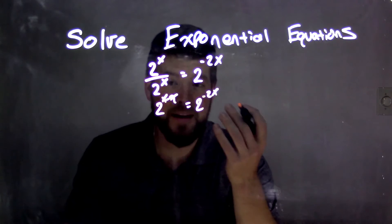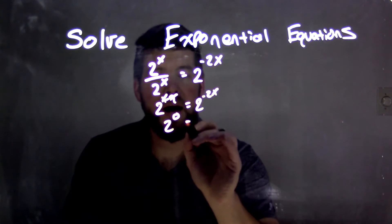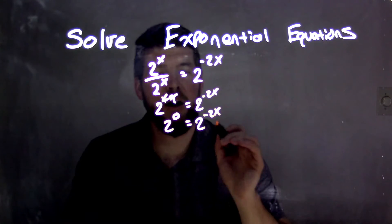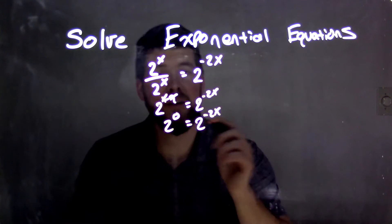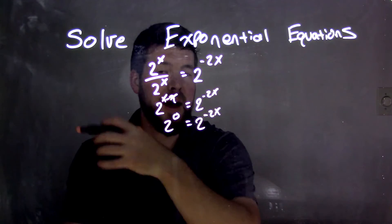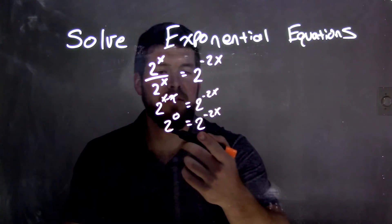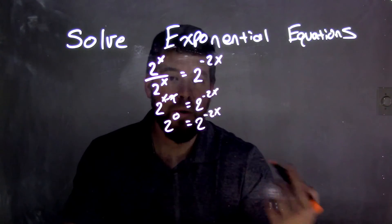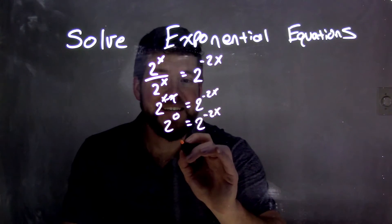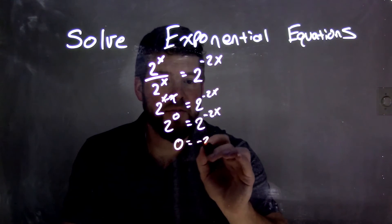x minus x is 0, so we have 2 to the 0 power, which is just 1, which is what we thought here — 2 to the x is equal to just 1. But now that we have the same base, we can set our exponents equal to each other. So we have 0 equals negative 2x.